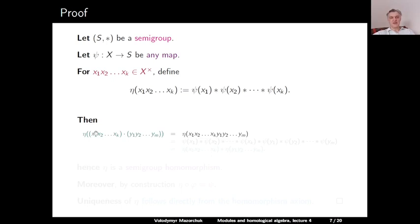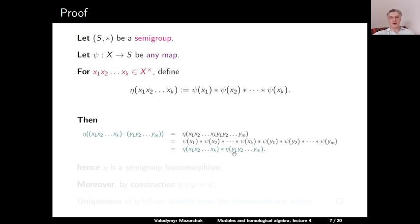If we apply η to the concatenation of words x₁, …, xₖ and y₁, …, yₘ, we get ψ(x₁) ∗ … ∗ ψ(xₖ) ∗ ψ(y₁) ∗ … ∗ ψ(yₘ). The part ψ(x₁) ∗ … ∗ ψ(xₖ) is exactly the image of x₁, …, xₖ under η, and similarly for y₁, …, yₘ under η. This proves that η is indeed a semigroup homomorphism.